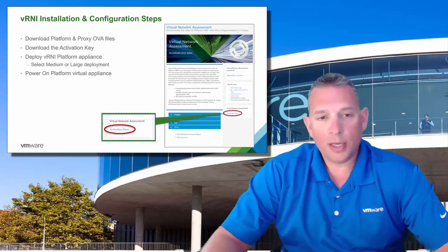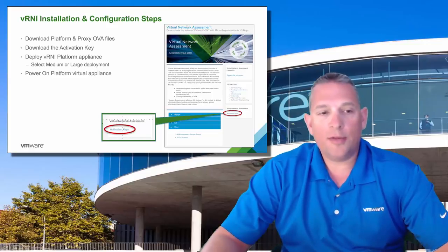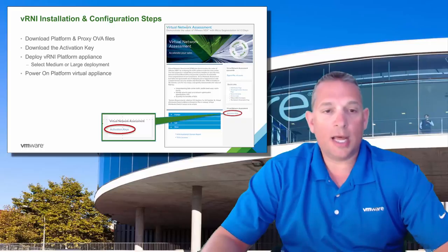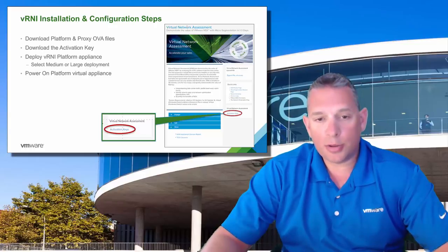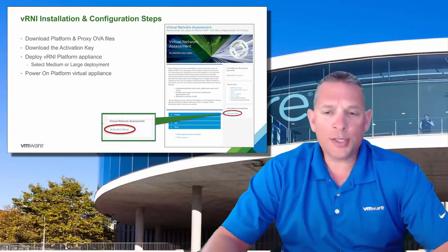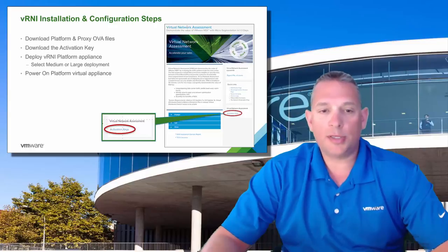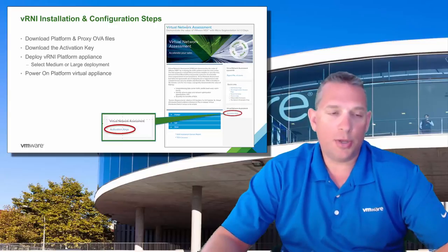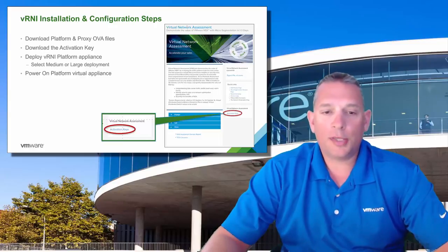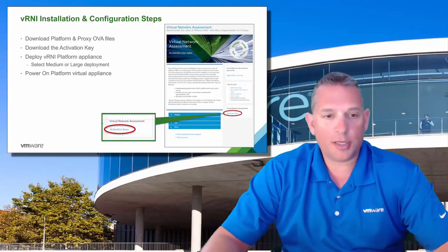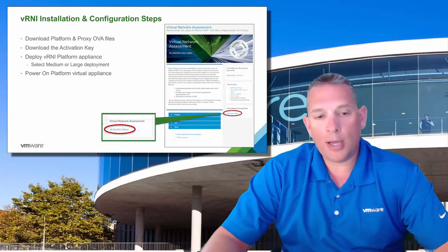Once you're ready to do your first assessment, let's talk about getting VRNI installed and configured. First, download the platform and proxy OVA files, and download the temp assessment key from the Partner Central page. A technical resource will then deploy the VRNI platform appliance using the downloaded OVA file, selecting either the medium or large size deployment based on the size of the environment. Once fully deployed, power on the platform appliance and wait until it's fully up and running before moving to the next step.